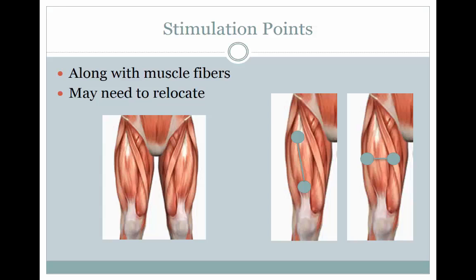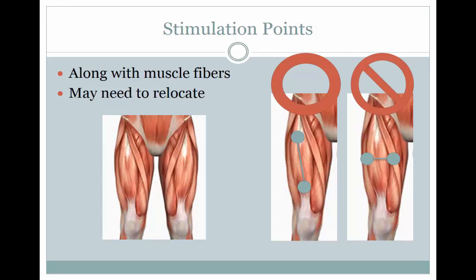If a clinician is trying to locate stimulation points, it is important to have a solid understanding of the musculature and underlying anatomy. It is imperative that a clinician be able to identify a muscle's origin, insertion, and fiber direction in order to properly place an electrode. The electrodes must be placed along the direction of the muscle fiber — do not place the electrodes perpendicular to the muscle fiber as it will have no effect. For example, for the quadricep muscle, place the electrodes parallel to the muscle fibers, not perpendicular, otherwise treatment would be generalized rather than targeted.